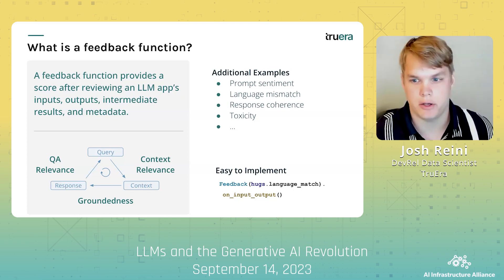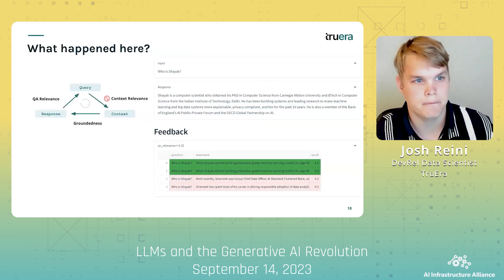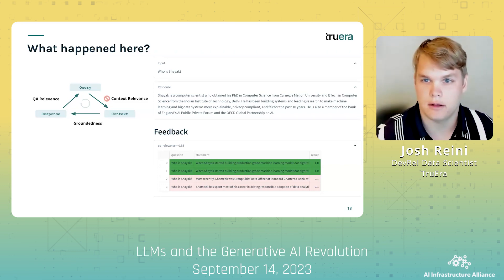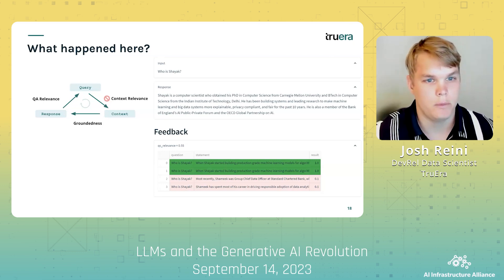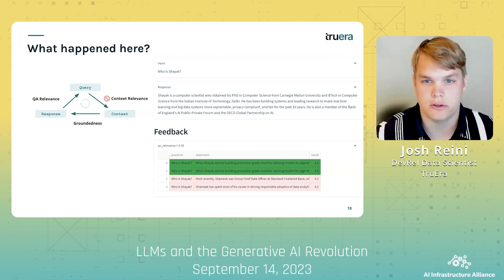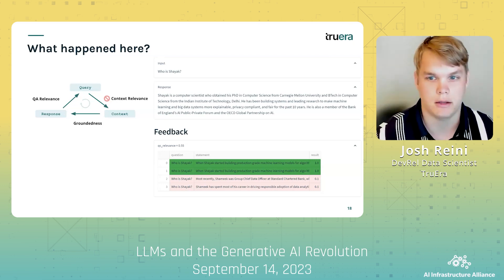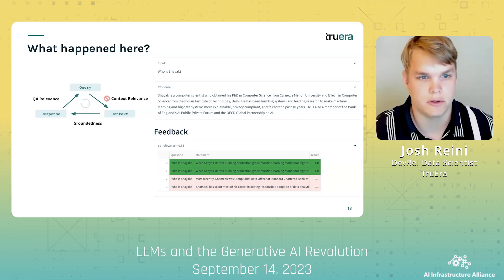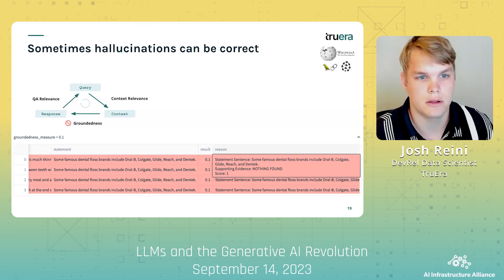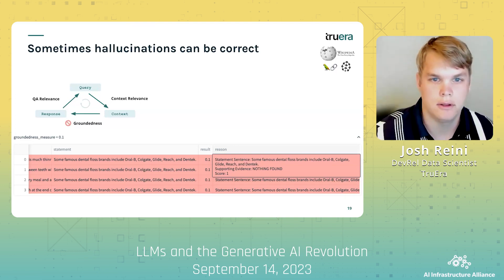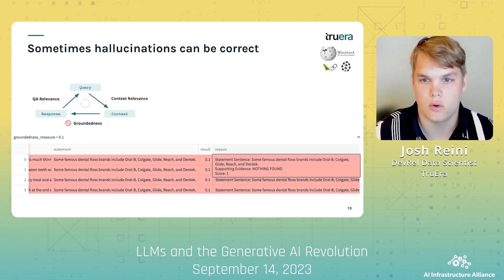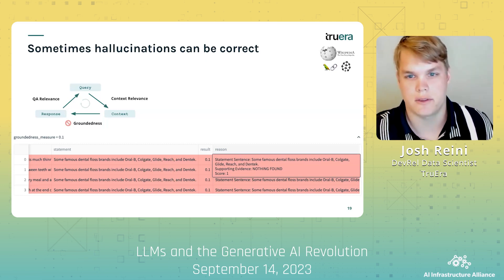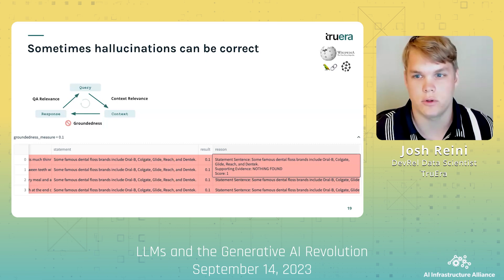Let's go through some examples of how to use feedback functions in practice. As we showed before, our LLM app responded mostly correctly to the question about Chiac, but it also added additional detail about Shamik. When we examine the context retrieved by the application, we see two chunks about Chiac, but also two additional chunks about Shamik, shown in red. TrueLens is able to evaluate this context and score these chunks low, resulting in a poor context relevance score. But hallucinations aren't always wrong — here we created a RAG using some Wikipedia pages, and asking about dental floss brands yielded correct answers like Oral-B and Colgate. Only problem was, these brands aren't listed anywhere in the context. With no evidence supporting the app's response, this evaluation leads to a low groundedness score.